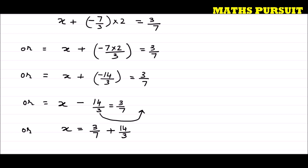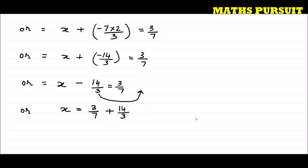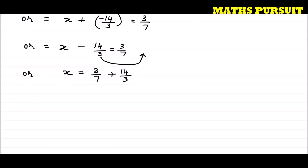When a minus number moves to the right hand side from the left hand side, it becomes positive. A positive number when it moves from right hand side to the left hand side it becomes negative. So what we got is x is equal to 3 upon 7 plus 14 upon 3. Now if you look here, the LCM is equal to 7 into 3, that is equal to 21.